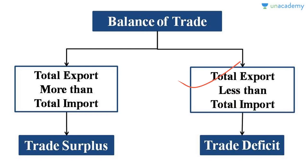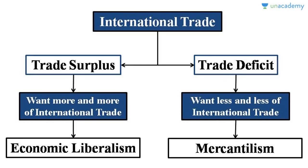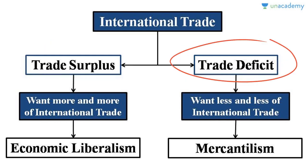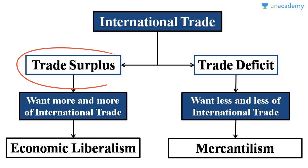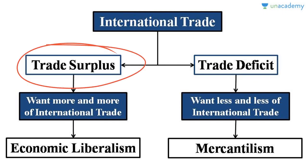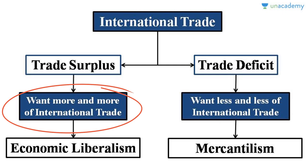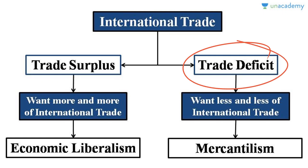In trade deficit, a country spends more and earns less. International trade gives rise to these two situations of trade surplus and trade deficit. Trade surplus is an advantageous situation — every country would like to be in this condition because you have more money in your hand after trade is over. Countries with trade surplus continuously will always want more and more international trade to happen.